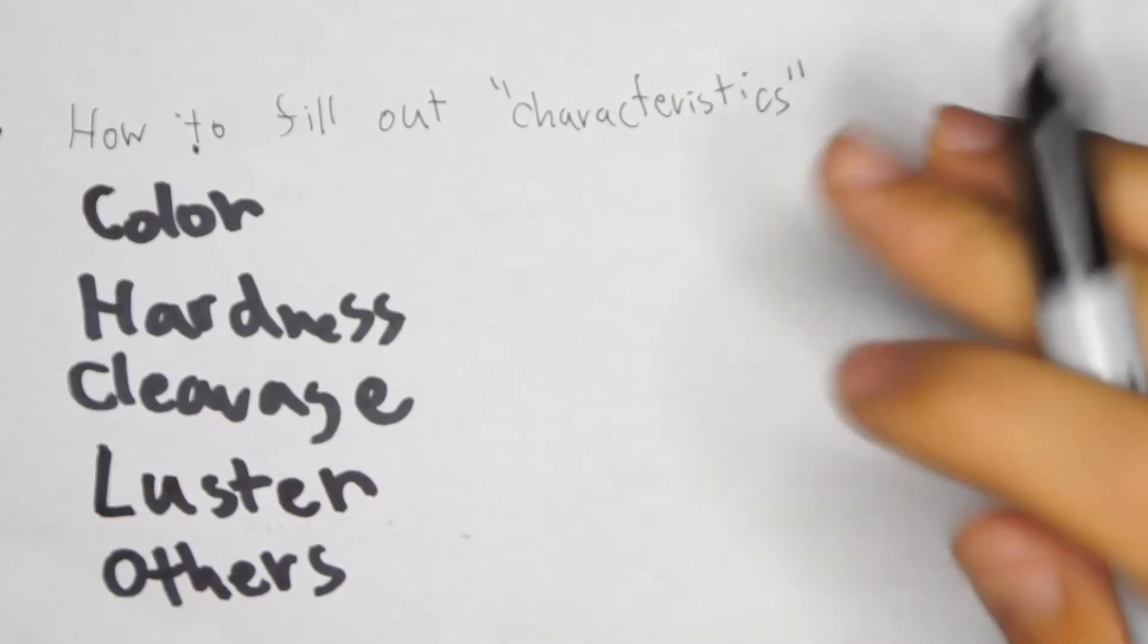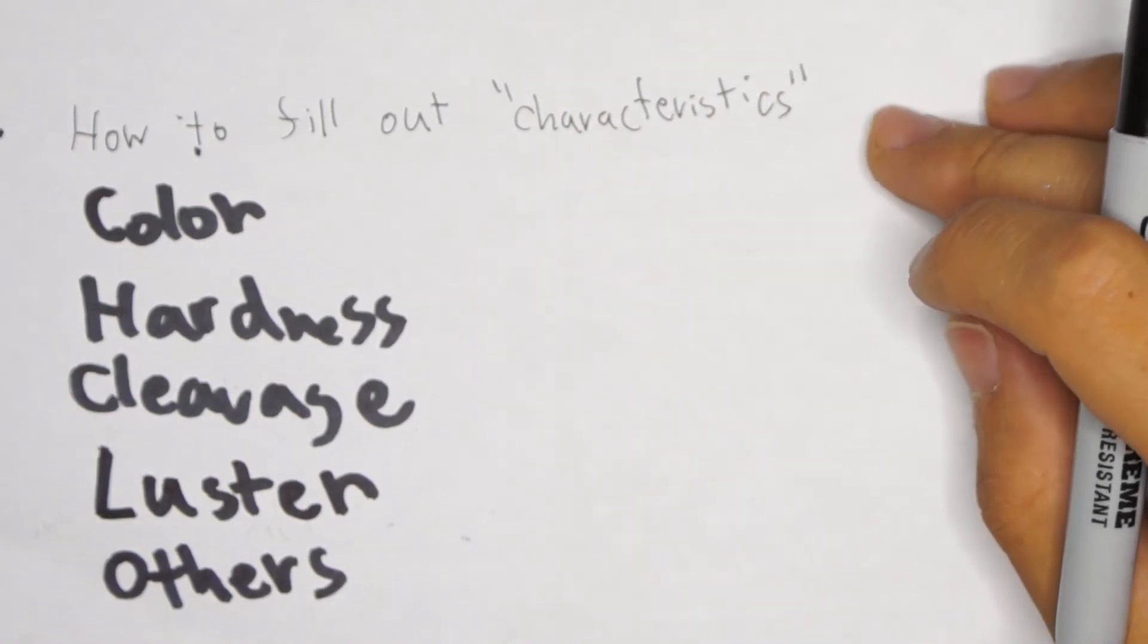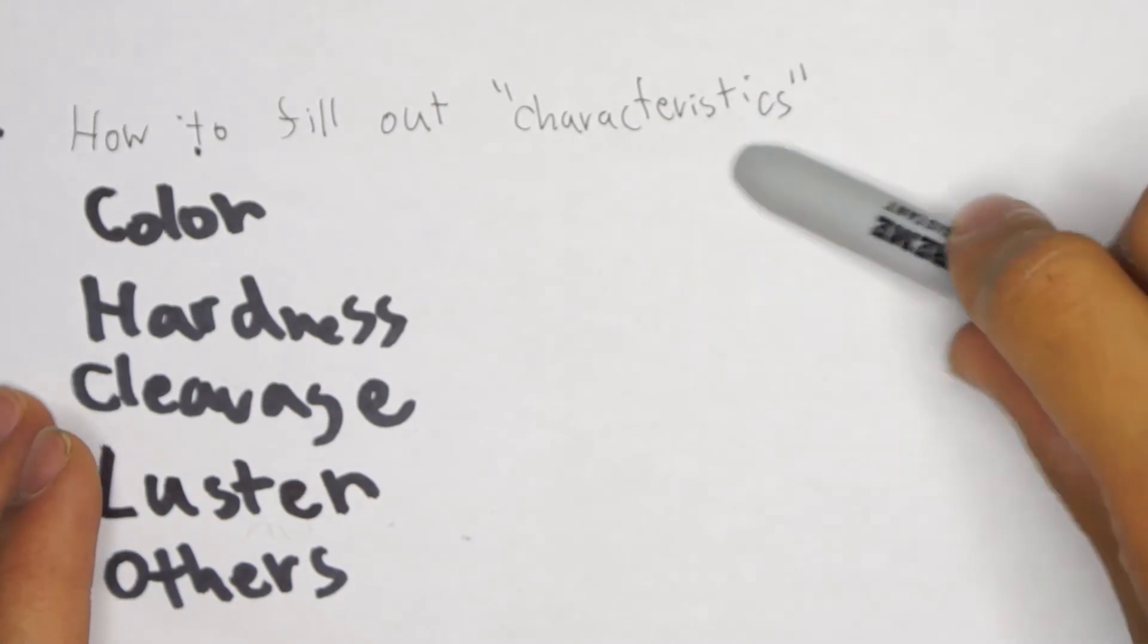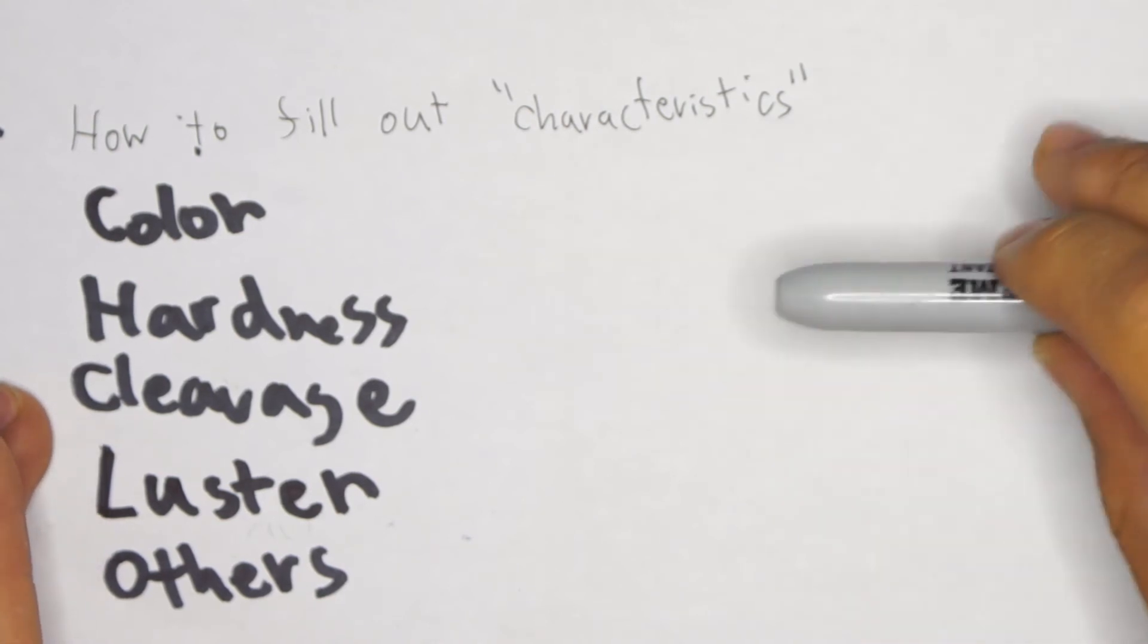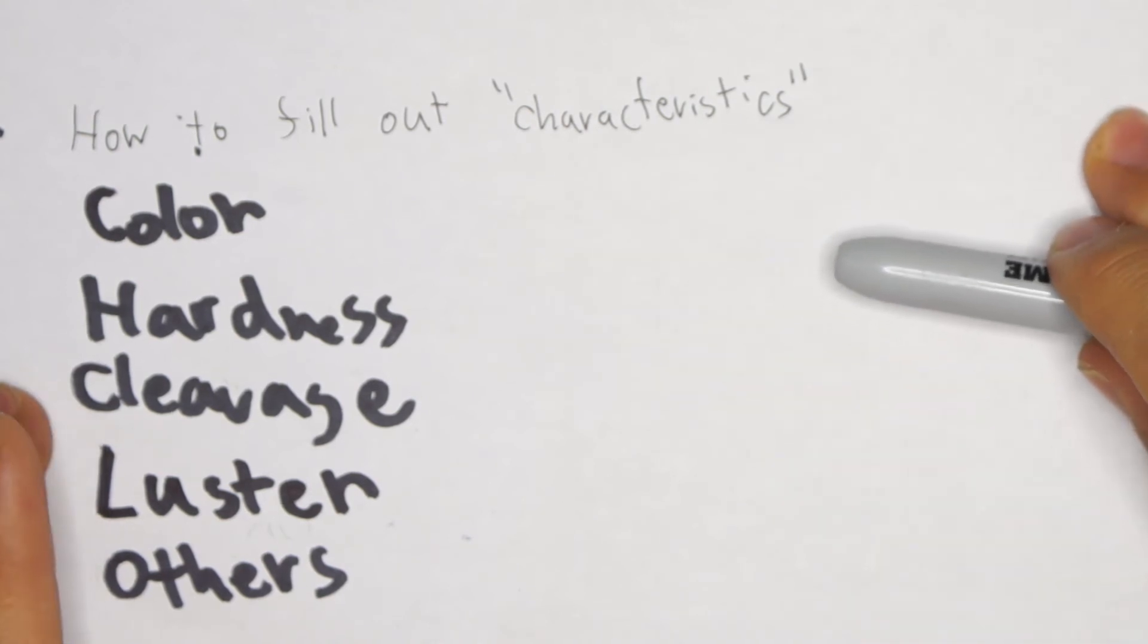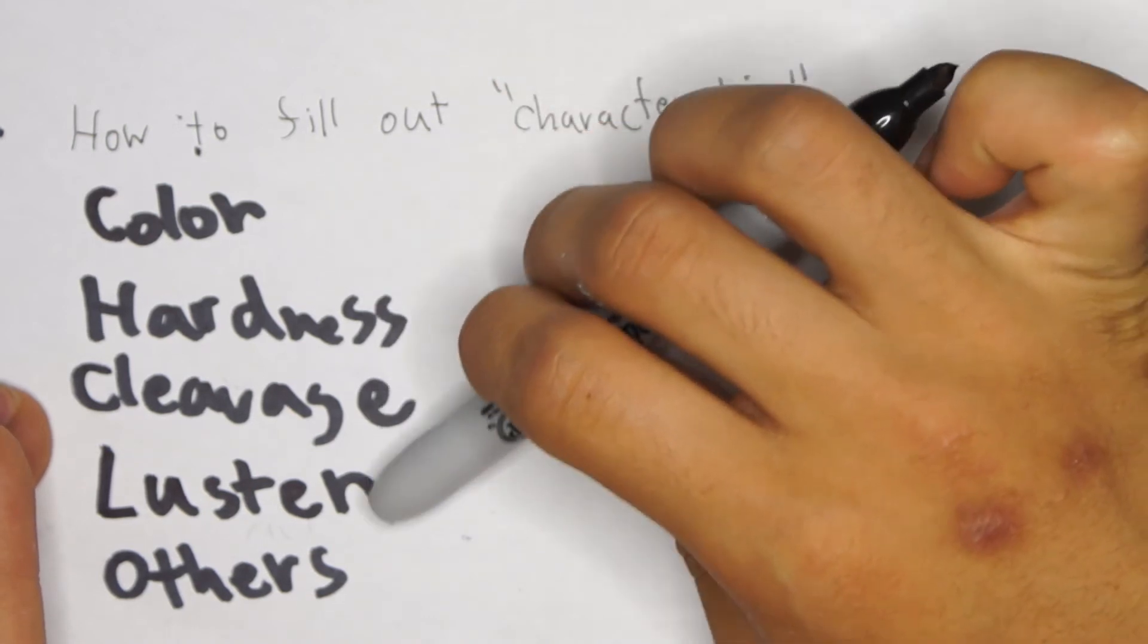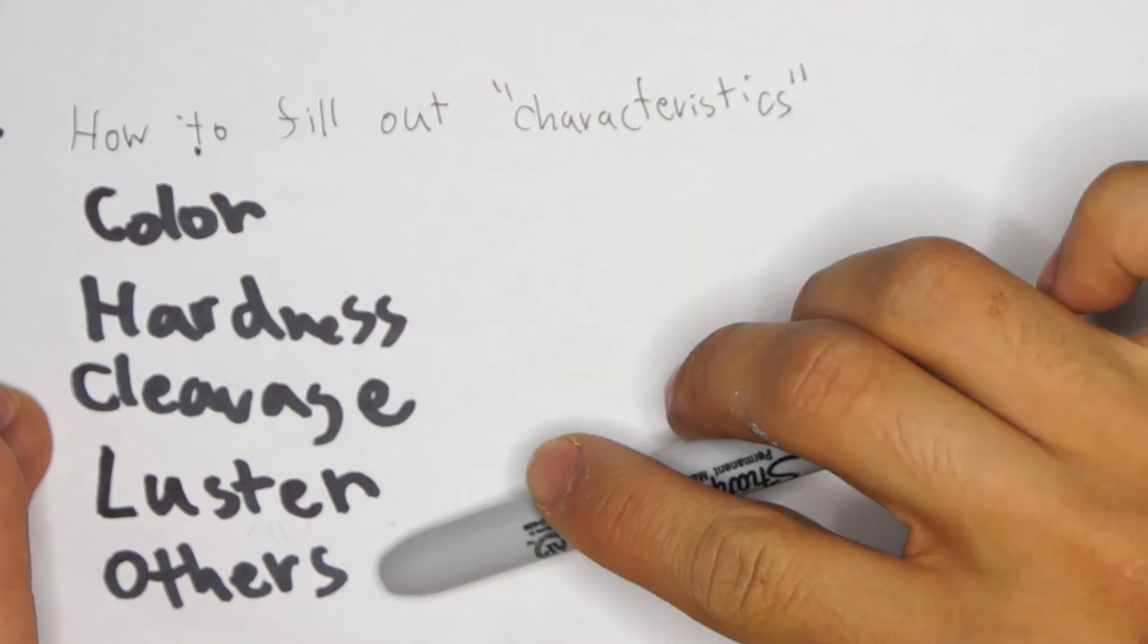Before I get started on identifying some minerals as examples, I'm just going to remind you, at the end of your Canvas quiz where you'll be doing the lab, it's going to ask you about the characteristics of each sample. What I'd do is keep a running list every time you look at one of these minerals so you don't have to go back later. The things you're going to end up having to write down there usually are color, hardness, cleavage, and luster. Those are all more or less applicable to all the rocks. And then some of them have others.